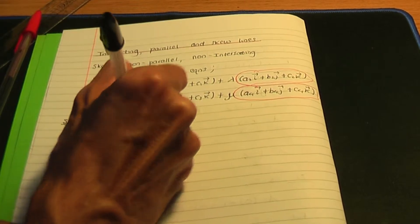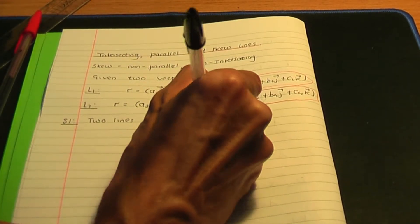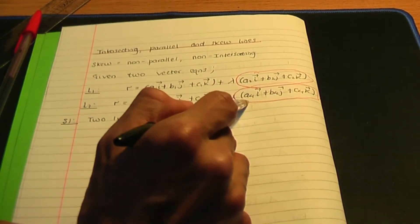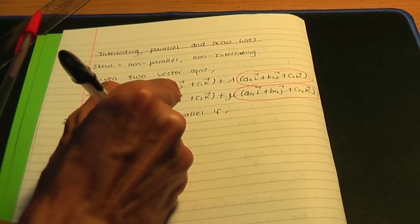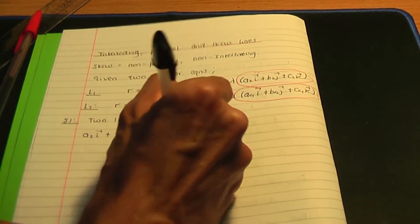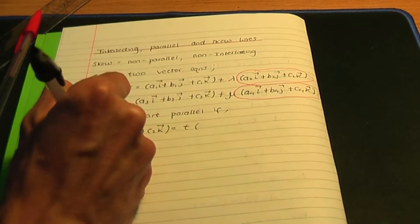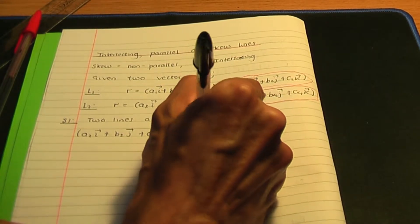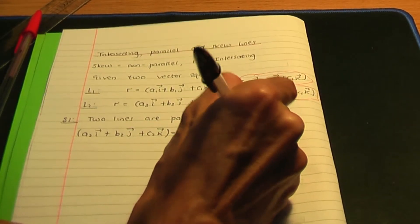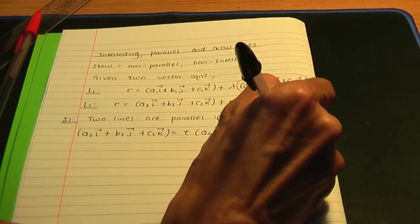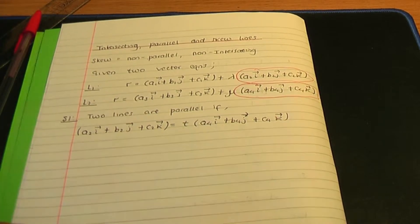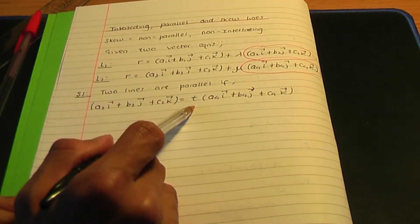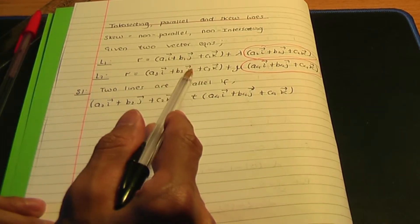So two lines are parallel if A2i + B2j + C2k = t(A4i + B4j + C4k), where t is a scalar. If one direction vector is a scalar multiple of the other, the lines are parallel. However, if they're not parallel, that implies by logic that they're either skew or intersecting.